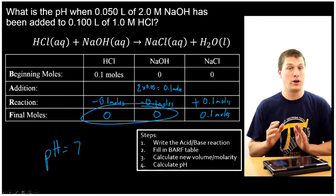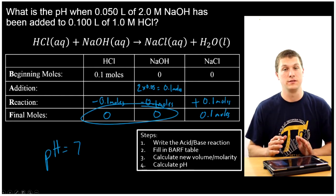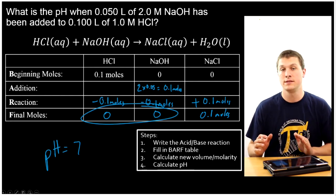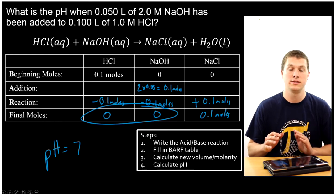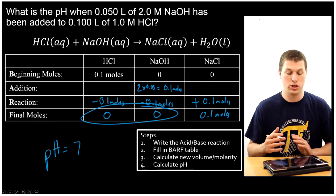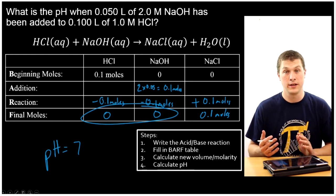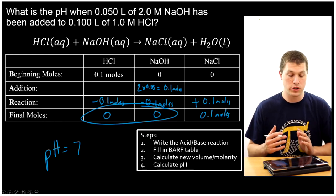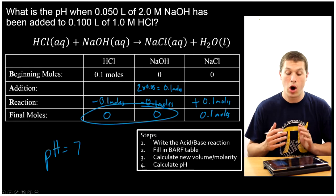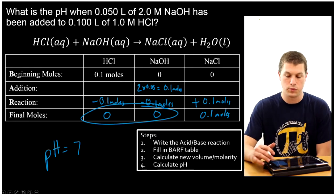That's only true for strong acid-base titrations. In weak acid-strong base titrations, the pH at the equivalence point will not be 7. For strong acid-strong base titrations, the pH is always 7 at the equivalence point.